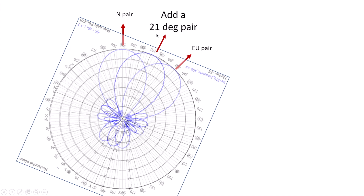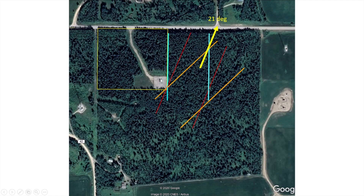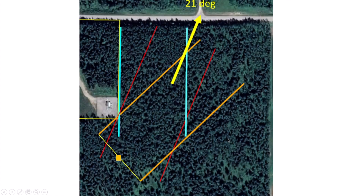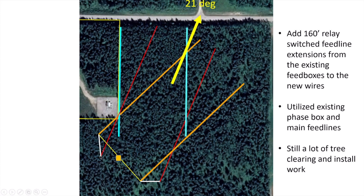What if I just put another pair pointing to 21 degrees — right between the two existing pairs? In red is shown the two new pairs I'll install. To minimize field work, the existing feed line going to the 45-degree European beverage pairs will be reused. Rather than put in a whole new phasing system, I'll add 260-foot coax feed lines. By putting a control voltage on the coax, a relay box at the feed point will select these equal-length extensions going to the new beverage wires.